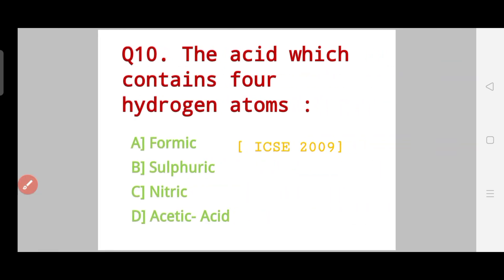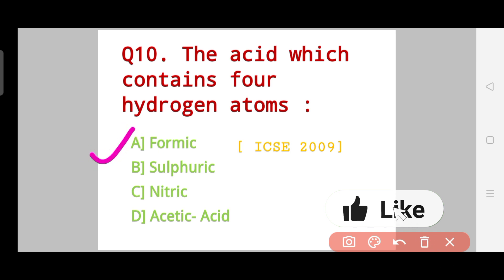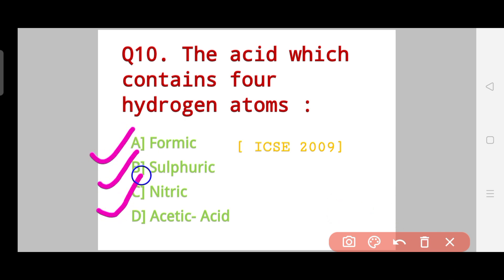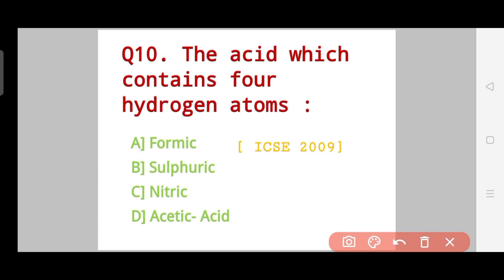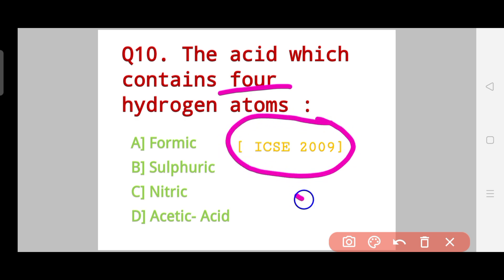The last question: which acid contains four hydrogen atoms? Your options are formic acid, sulfuric acid, nitric acid, or acetic acid. Which of these acids contains four hydrogen atoms? This is an ICSE 2009 question.